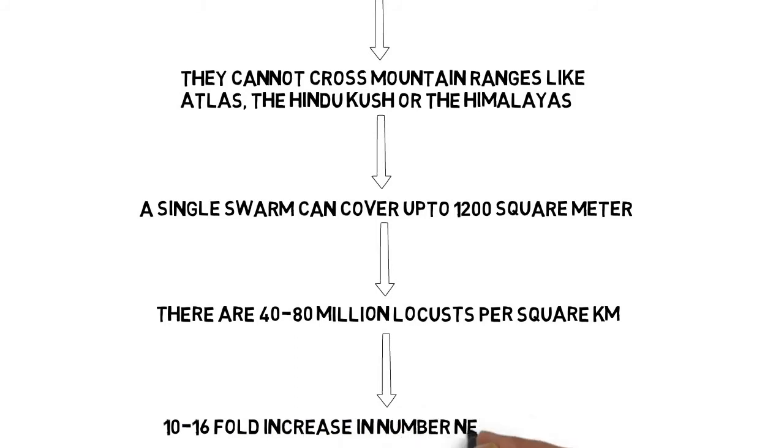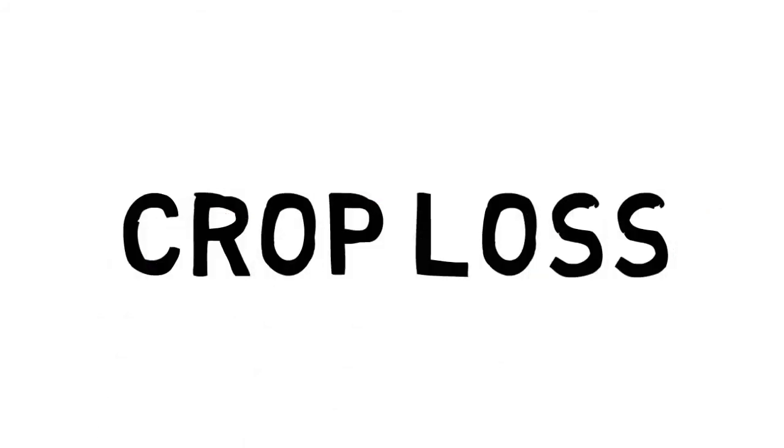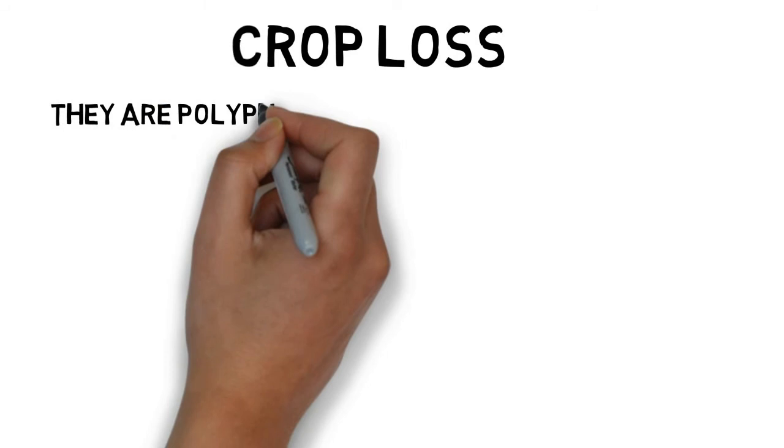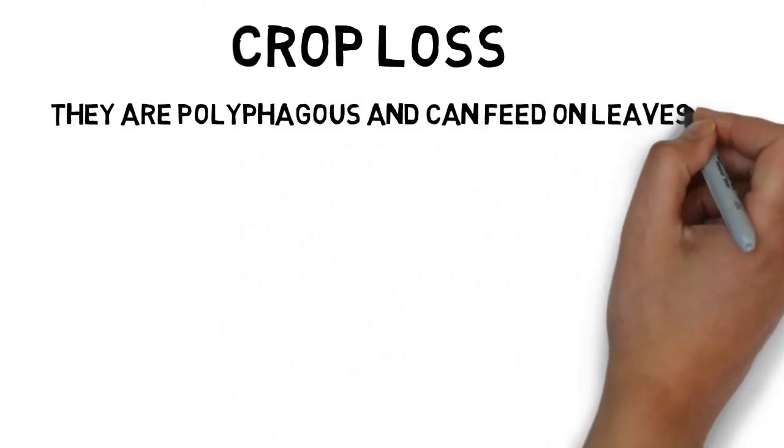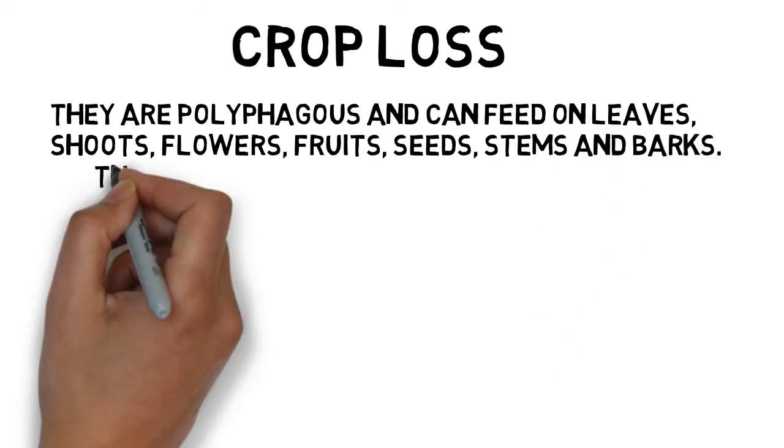Crop loss: they consume an estimated equivalent to their body weight, 2 grams each day, in green vegetation. They are polyphagous and can feed on leaves, seeds, flowers, fruits, and bark. Nearly all crops and non-crops are eaten, including fruits, vegetables, pulses, grasses, rice, maize, wheat, etc.